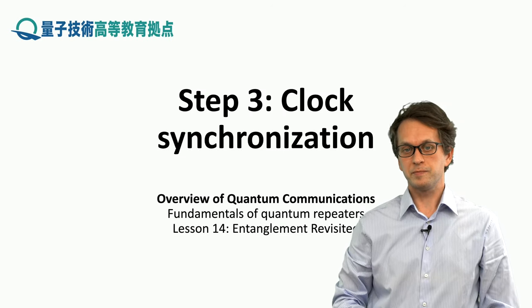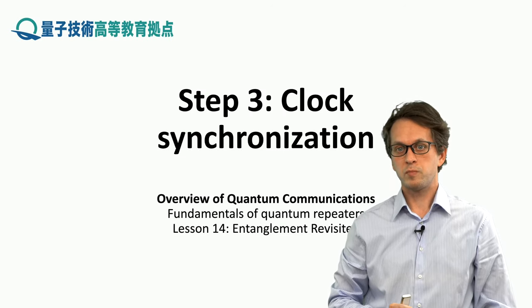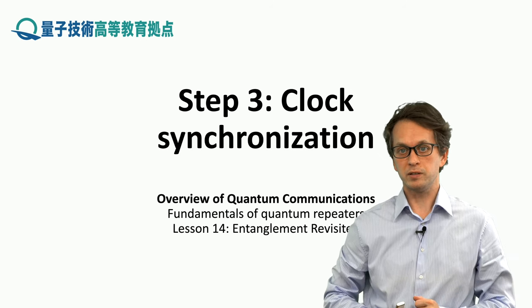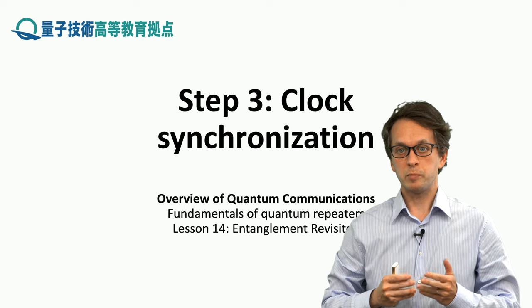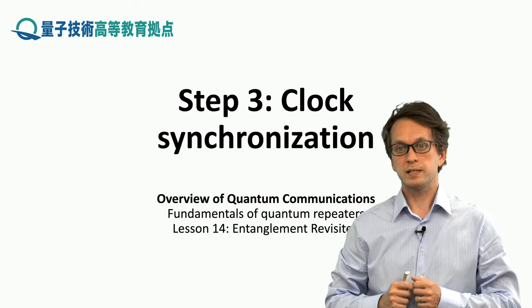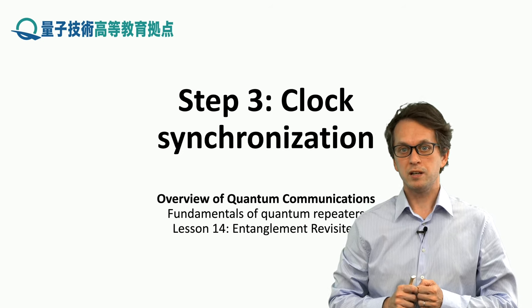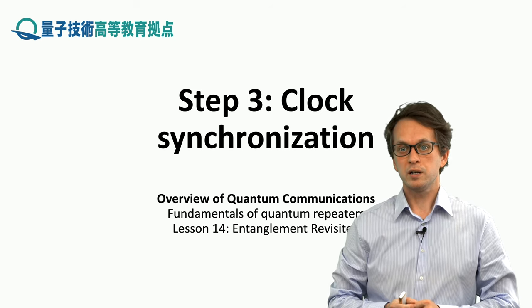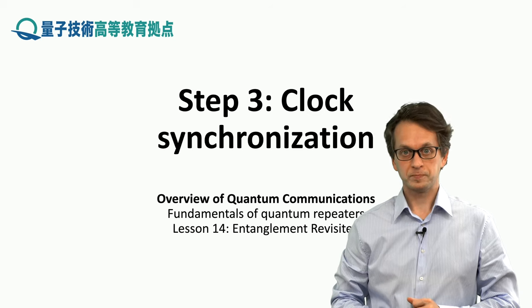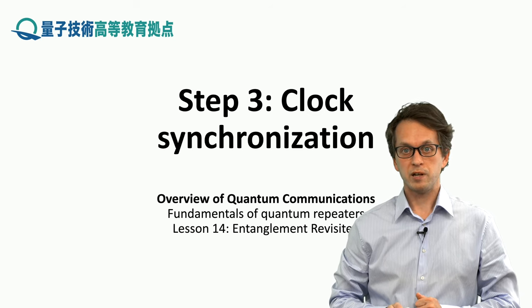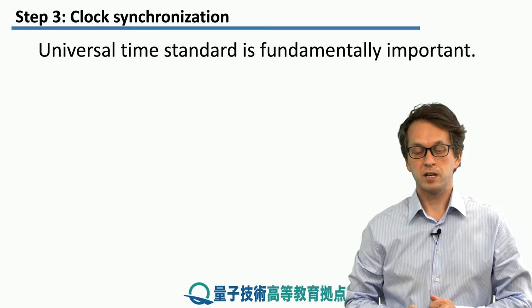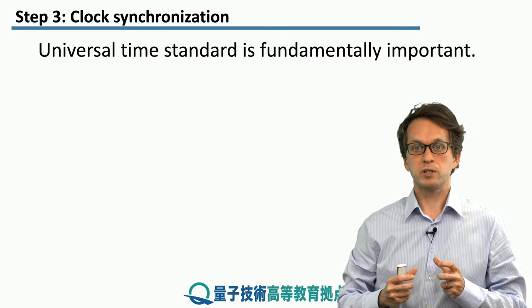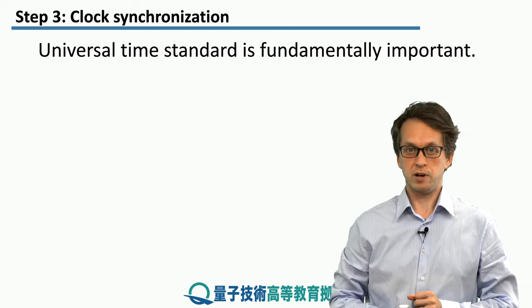Step three: clock synchronization. We have seen in this module the applications of how we can use entanglement — the example of teleportation and entanglement-based QKD. In the remaining two steps of this lesson, we will consider a few other examples of applying entanglement. Here in step three, we will look at clock synchronization. Before we say how we can synchronize clocks, let's ask the question why we want to synchronize clocks.